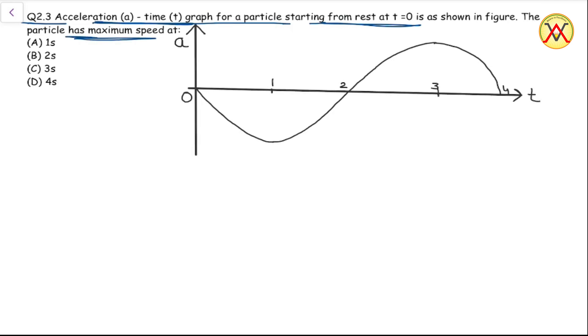Before attempting this question, we should know that the area under an acceleration-time graph gives us the change in velocity. Since this particle had zero velocity at time t equal to zero, the area under this curve will give us its velocity at time t.